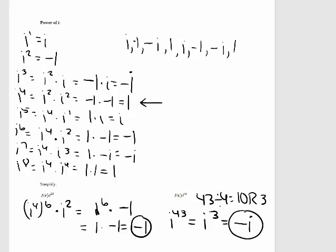Let's try this with i to the 43rd. 43 divided by 4 is 10 with a remainder of 3. So i to the 43rd is the same as i to the 3rd, since the remainder is 3. Going back, i cubed is equal to negative i. That means i to the 43rd is also equal to negative i.